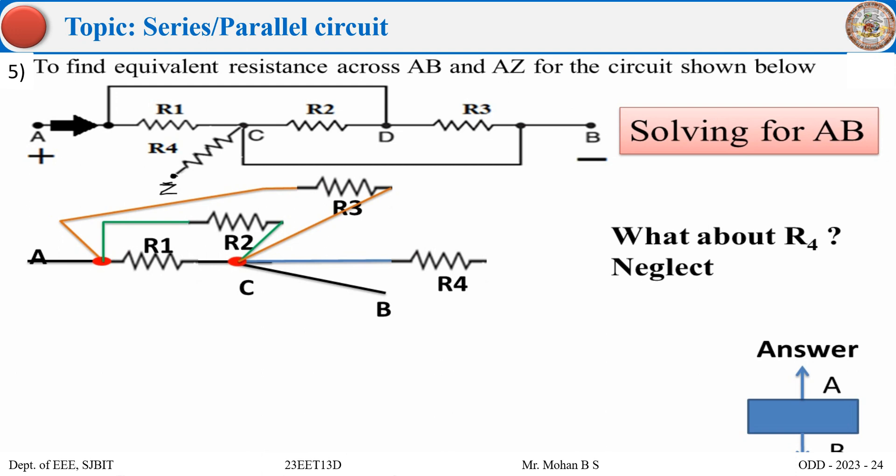I think now it is evident that all three R1, R2, R3 are parallel across A and B.